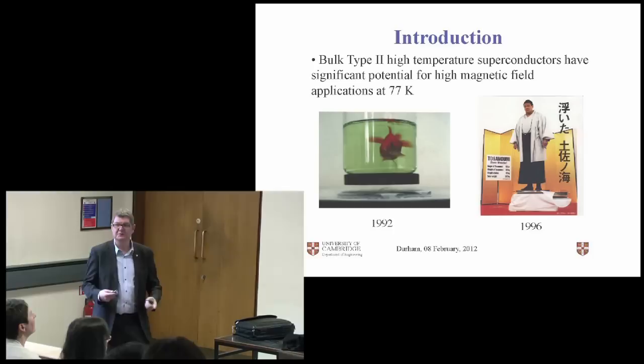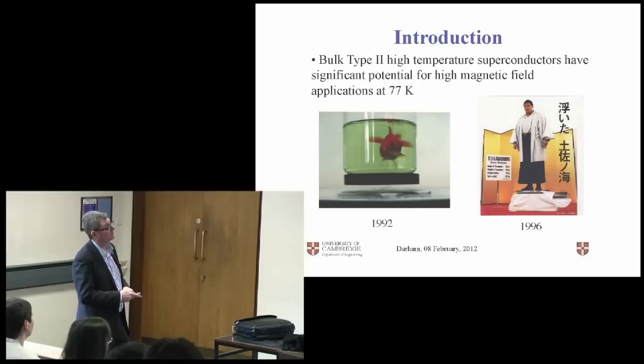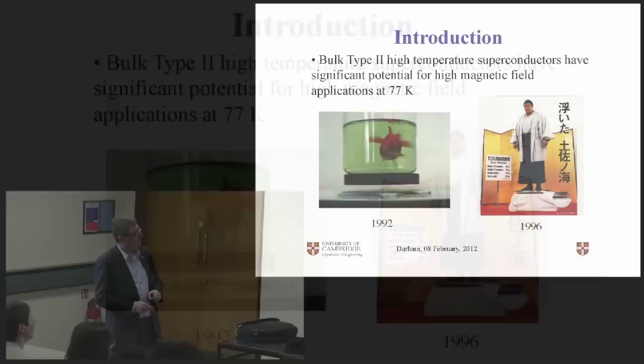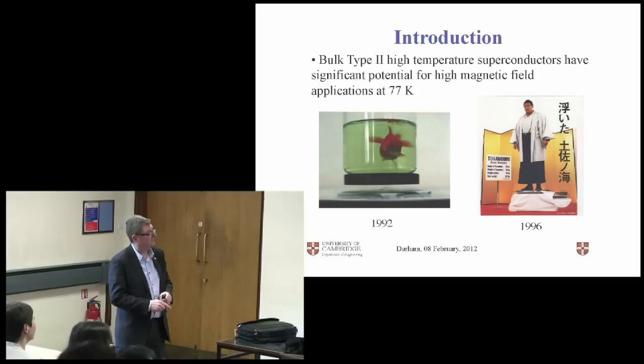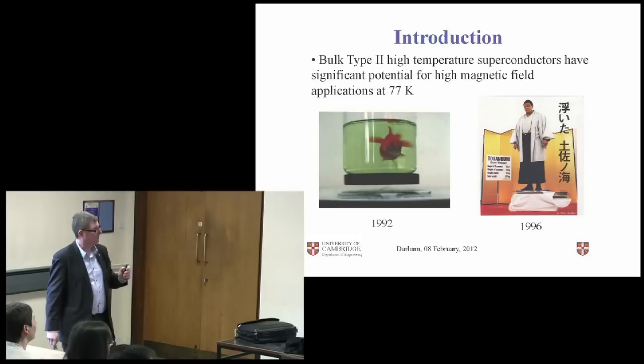So here's the introduction. We have different types of superconductors, and I'm going to be talking about type 2. Type 2 are the ones that we apply practically. They operate at high currents and different fields. This was published in 1992 by a Japanese group. And obviously it's a goldfish levitating. The goldfish and the jar and the permanent magnet that sits on have a mass of 2 kilograms. Here's a bulk superconductor, and we've got this very nice stable levitation above this bulk magnet.